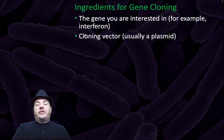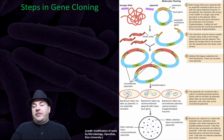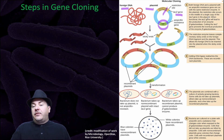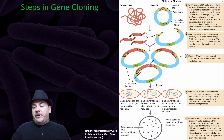The ingredients for gene cloning involve the gene you're interested in — for example, the insulin gene or the interferon gene — and a cloning vector, which is usually a plasmid. Both the foreign DNA, such as human DNA, and a plasmid that carries ampicillin resistance are cut with the same restriction enzyme. In the plasmid, the restriction site occurs in the middle of the single copy of the lacZ gene, cutting it. When functional, the lacZ gene leads to production of the enzyme beta-galactosidase. Cutting the lacZ gene prevents eventual production of beta-galactosidase. The restriction enzyme leaves complementary sticky ends on the foreign DNA fragment and the plasmid, allowing the foreign DNA to be inserted when the sticky ends anneal. Adding DNA ligase reattaches the DNA backbones, creating recombinant DNA plasmids.